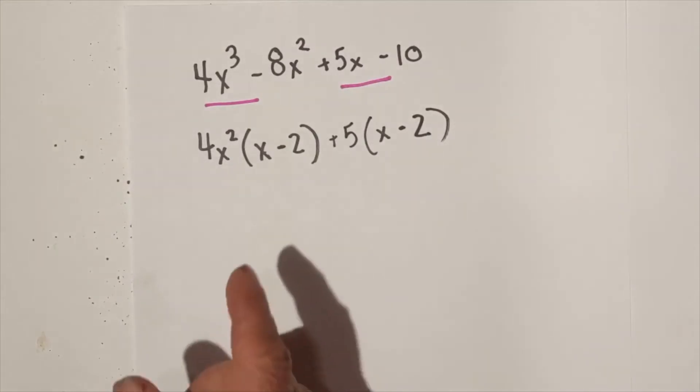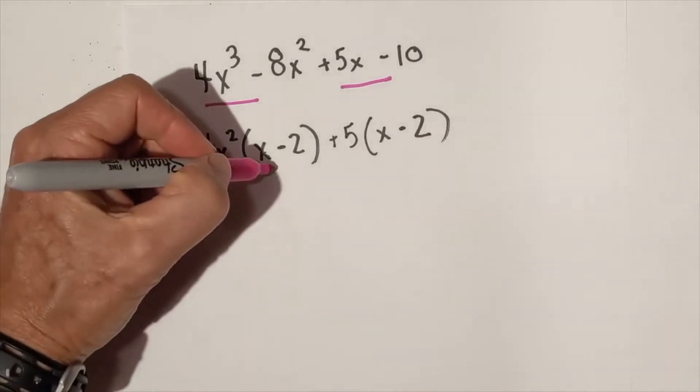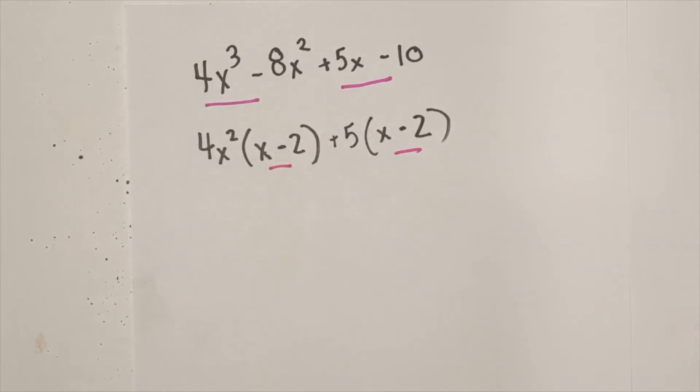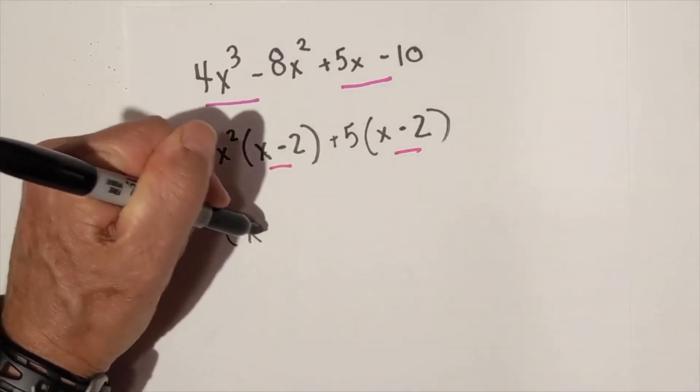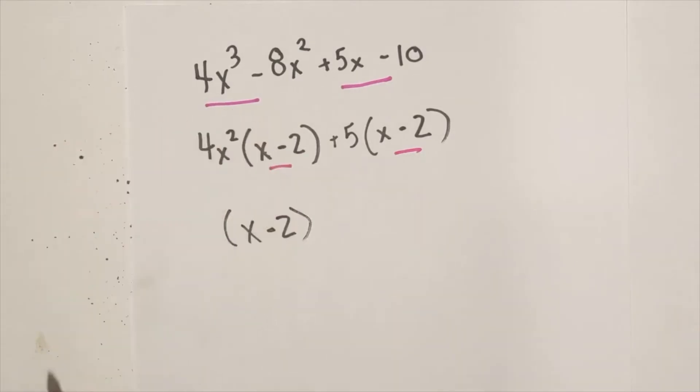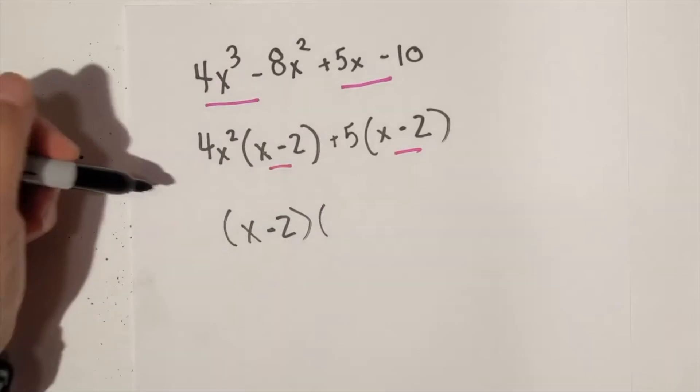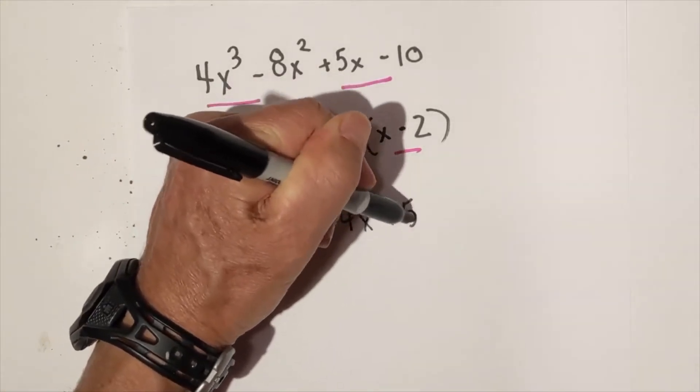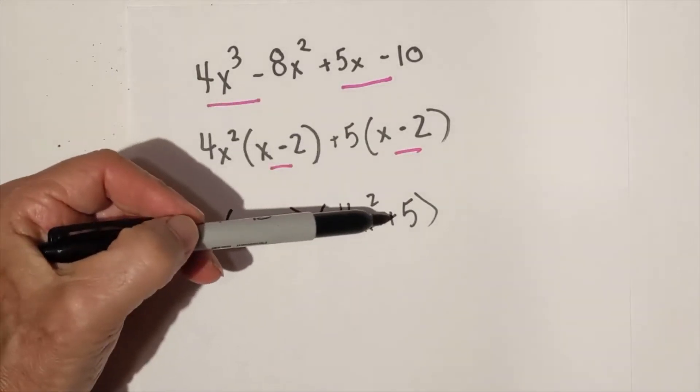So now we have found the greatest common factor and we have removed it. Now the common binomial is x minus 2, so we're going to place that right out in front. And what do we have left over? We have 4x squared plus 5. And notice how the sign follows the 5 here.